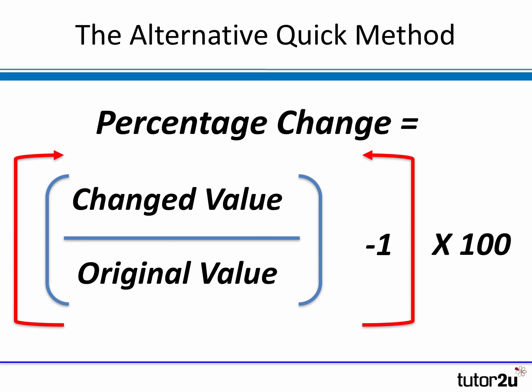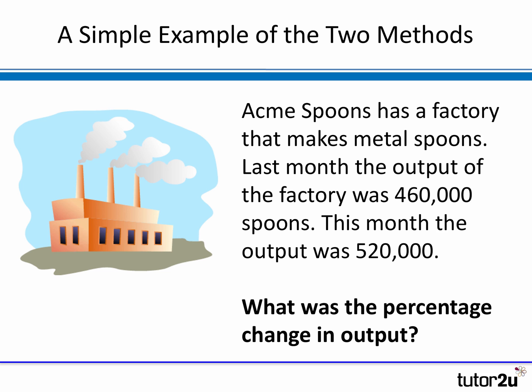Let's have a look at a simple example where we can try both methods to calculate the percentage change. We've got a spoon factory — Acme Spoons has a factory that makes high class metal spoons. Last month, the output of the factory was 460,000 spoons. This month, the output was 520,000. What was the percentage change in output? Hopefully you can see from the base numbers, 460 and 520, that the output has increased this month compared to last month. But what was the percentage change?